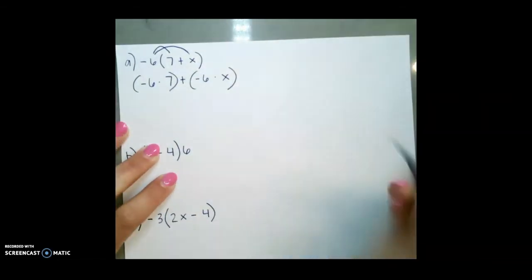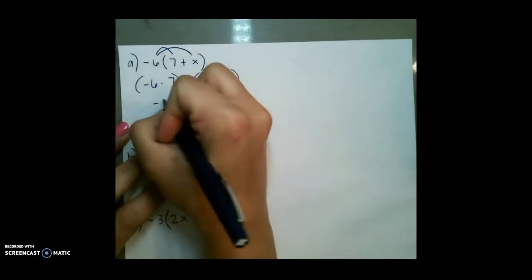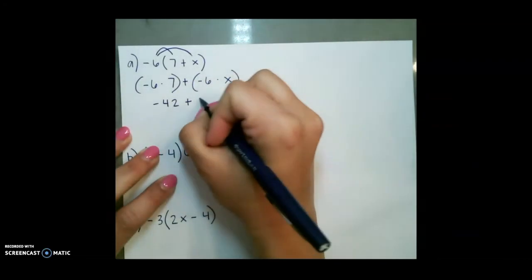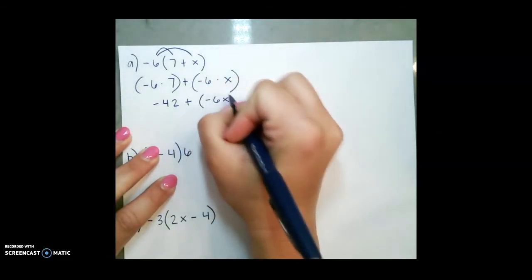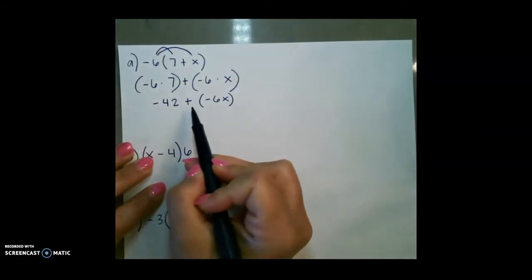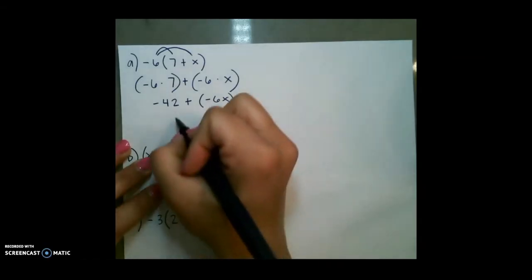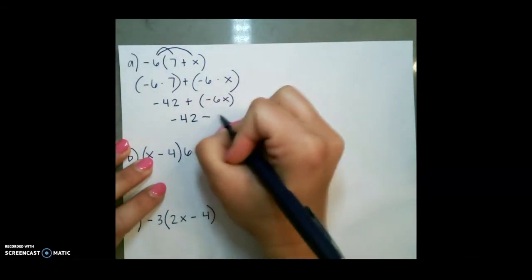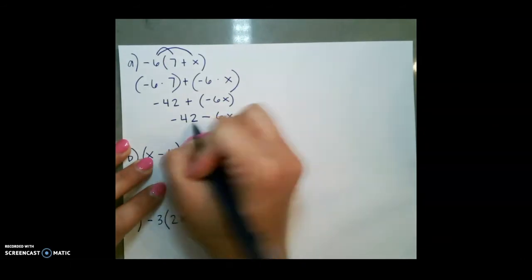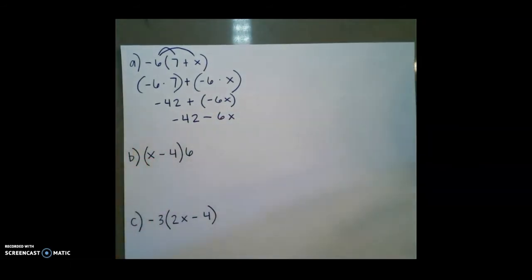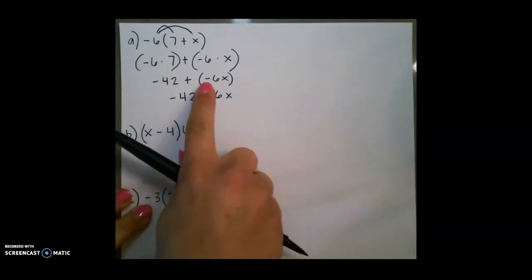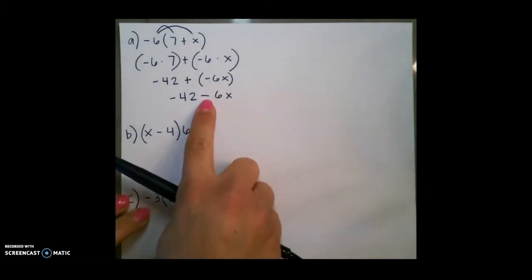Negative 6 times positive 7 is negative 42, plus negative 6 times x is negative 6x. Since we have a double sign here — plus a negative — I'm going to change this to just one sign, which would be negative 42 minus 6x. Remember that when you're adding a negative, it's the same thing as subtracting.